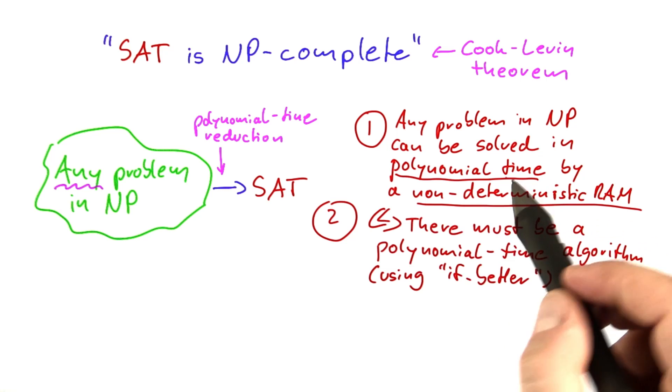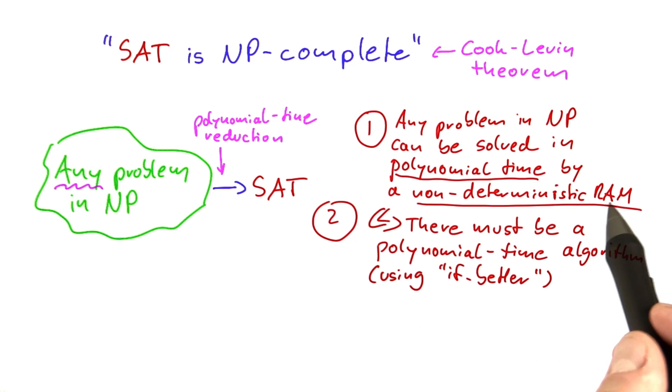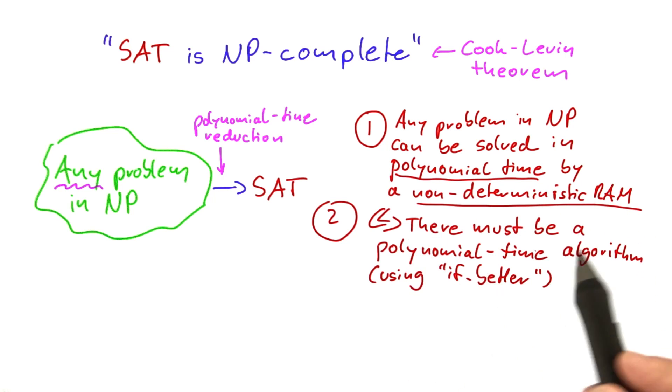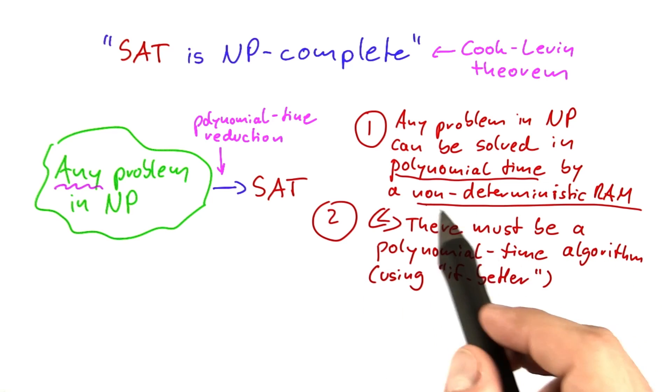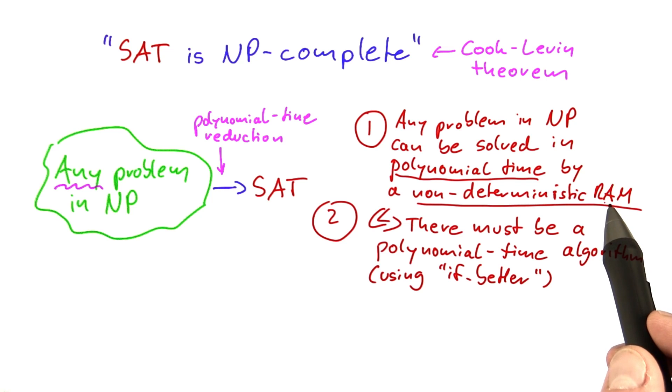Because if we can solve a problem in polynomial time on a non-deterministic RAM, then that means there must be some polynomial time algorithm. Of course, that algorithm is going to use the if-better function because it's running on a non-deterministic RAM.